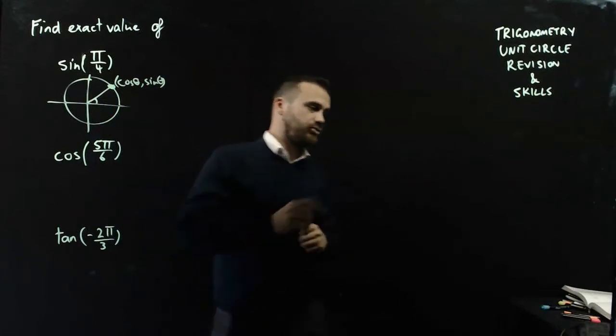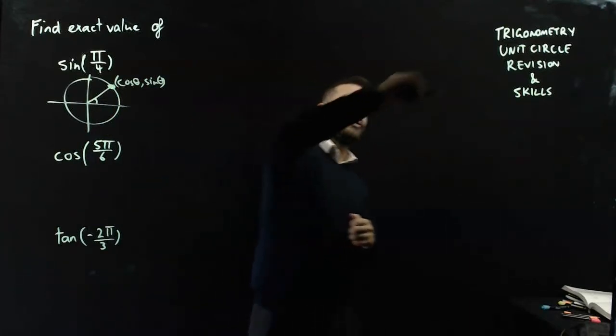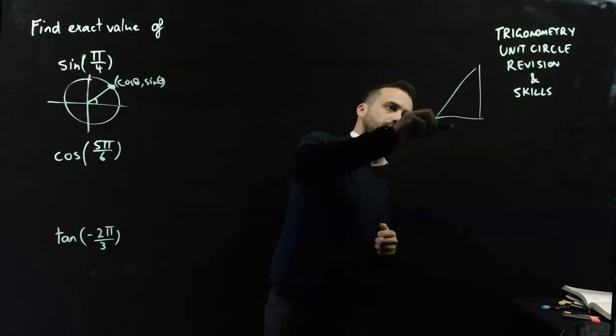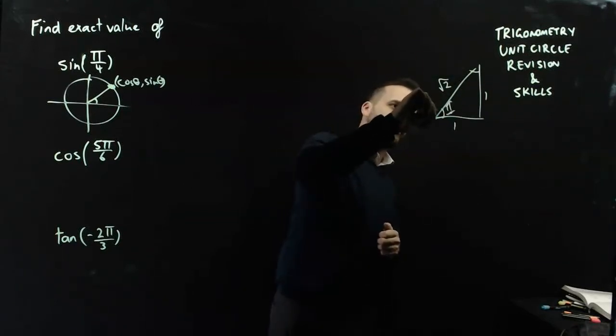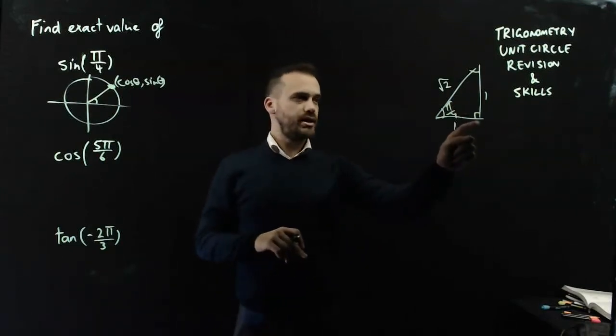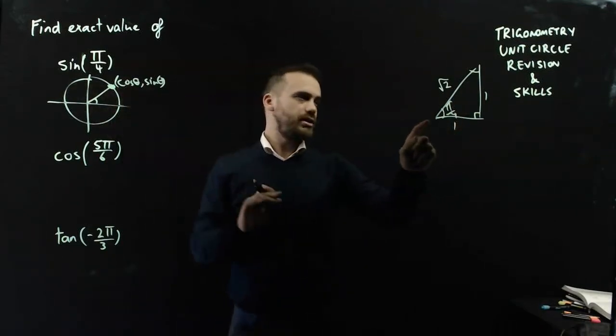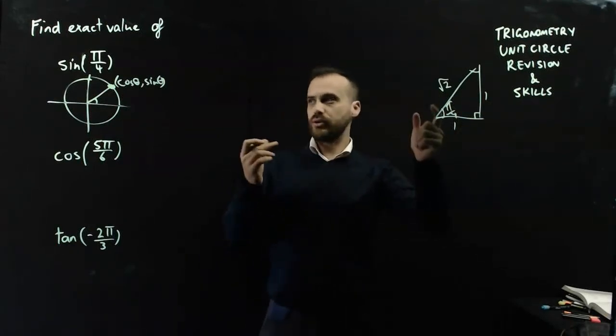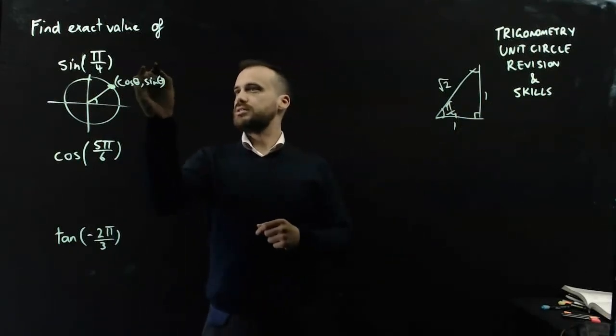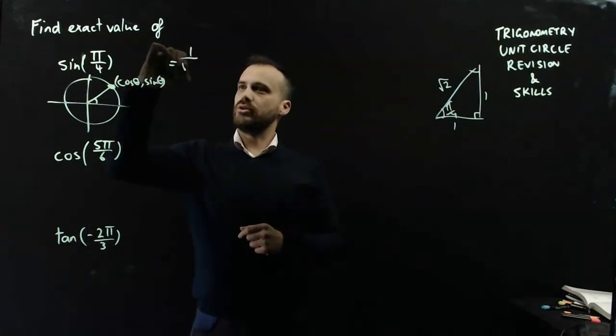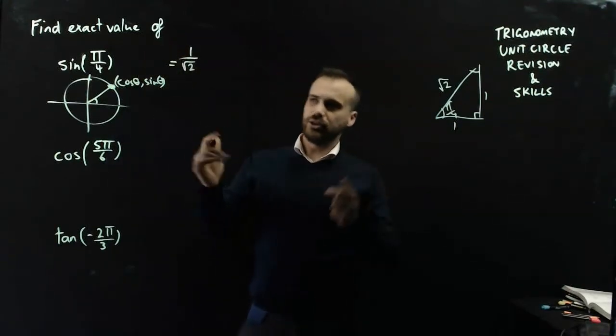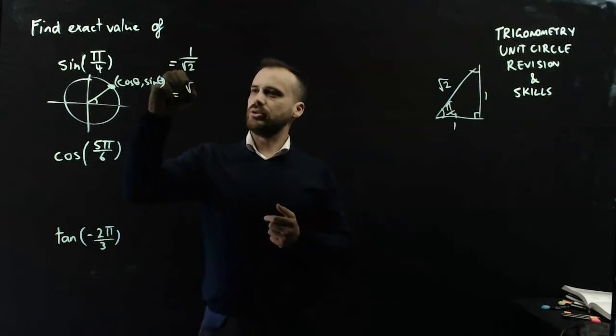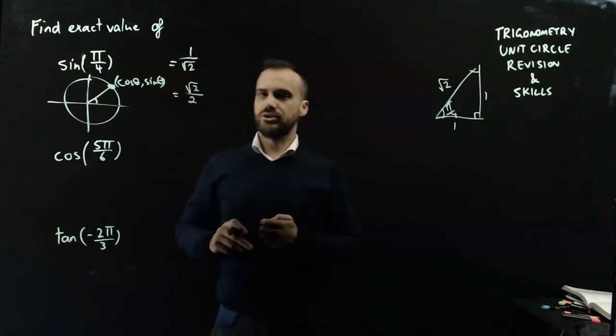To do that, a standard triangle is probably a useful thing. So I'll just draw one in here, 1, 1, root 2. That angle there is π on 4, and that is a right angle. Sine is going to be opposite over hypotenuse, 1 on root 2. So the answer is 1 on root 2. If you want to rationalize denominators, we can call it root 2 on 2.